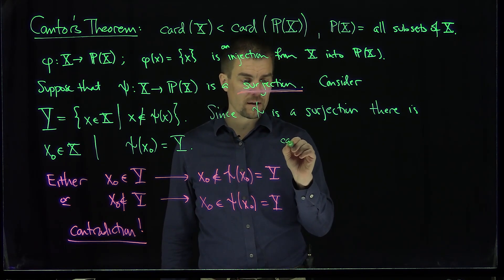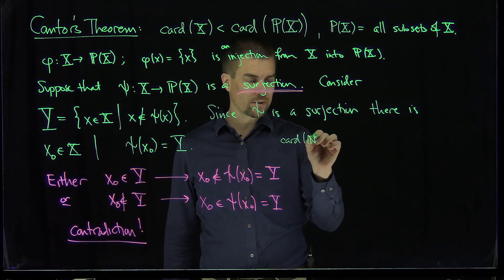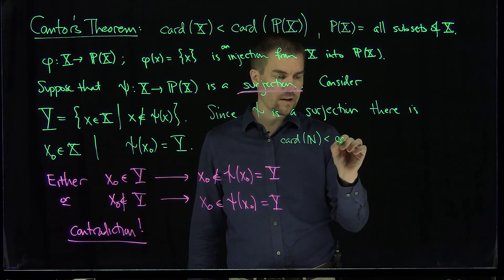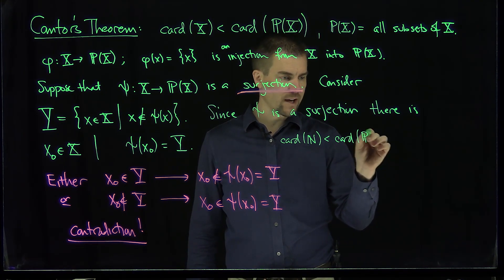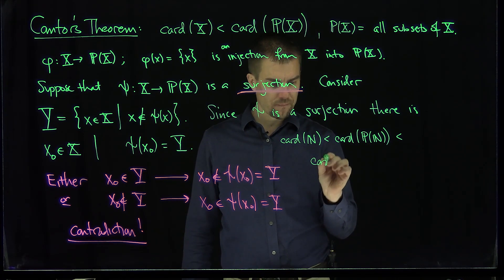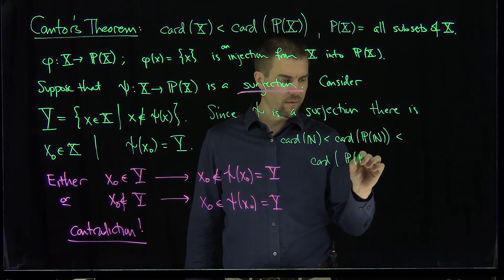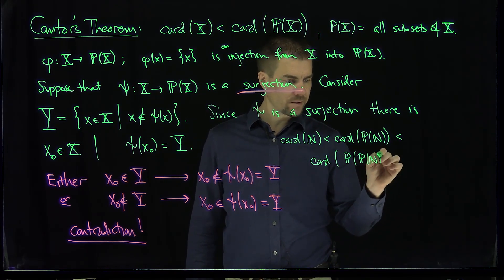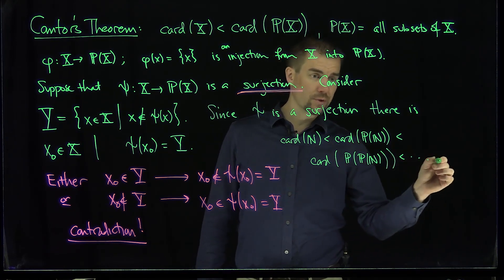For example, we can conclude that the cardinality of the natural numbers is less than the cardinality of the power set of the natural numbers, is less than the cardinality of the power set of the power set of the natural numbers, and this chain goes on forever.